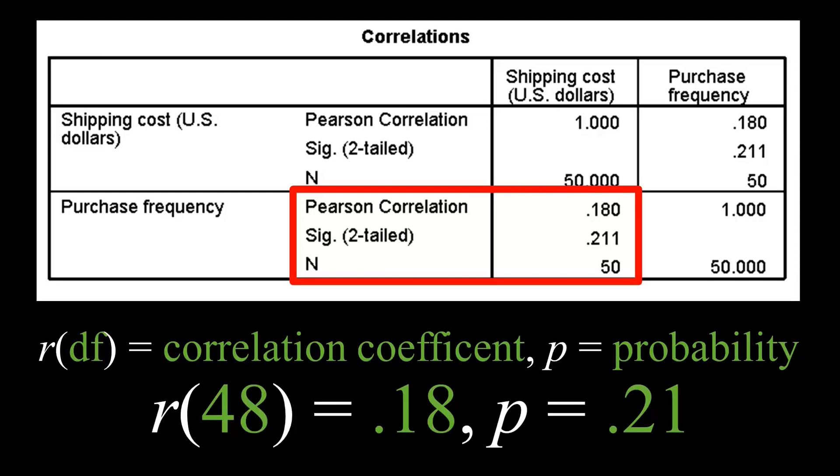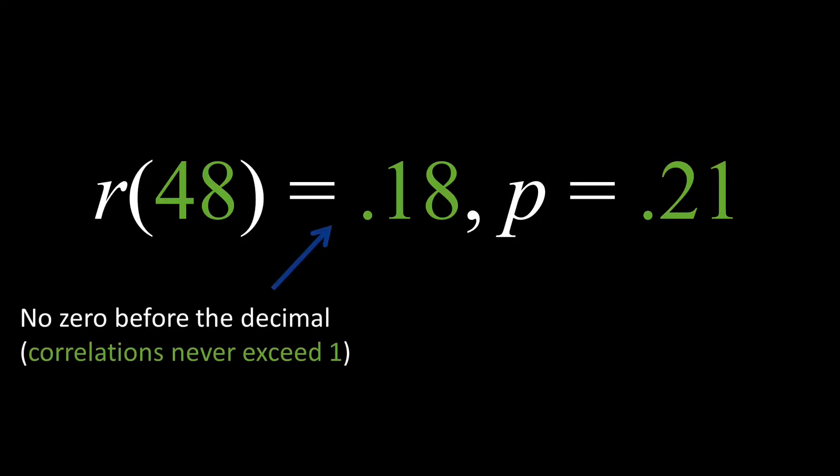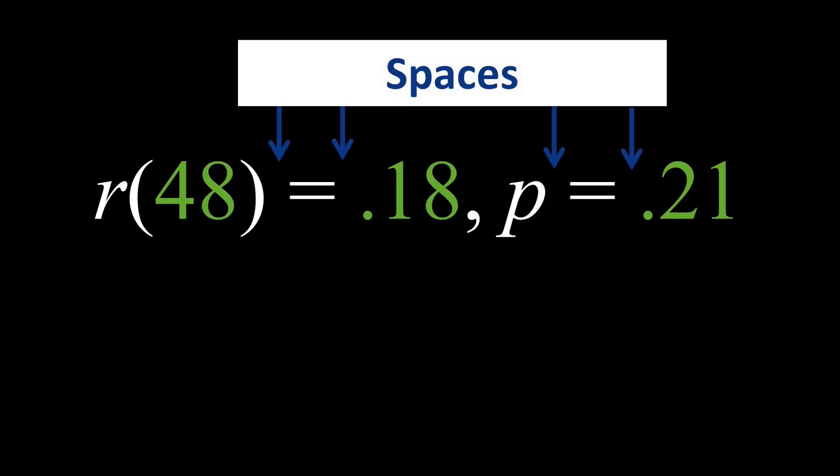Notice that the r and p are lowercase and in italics, and everything else is in regular typeface. Also note that zeros are not placed before the decimals because r and p never exceed one. Also put spaces before and after the equal sign to make sure that the result is readable.